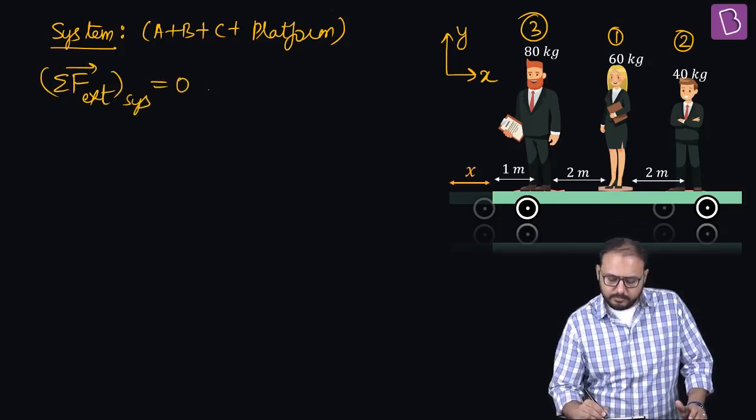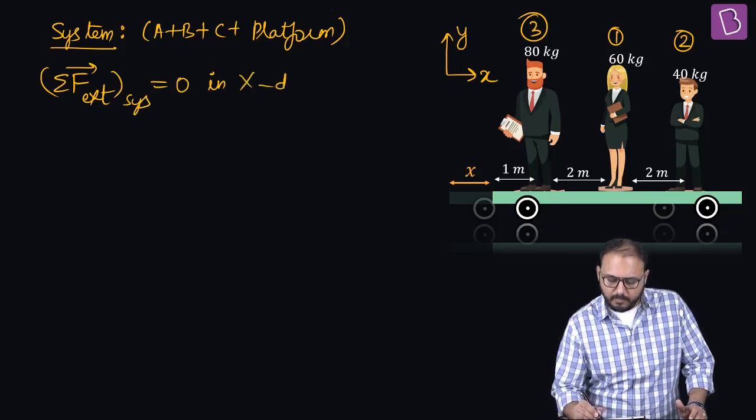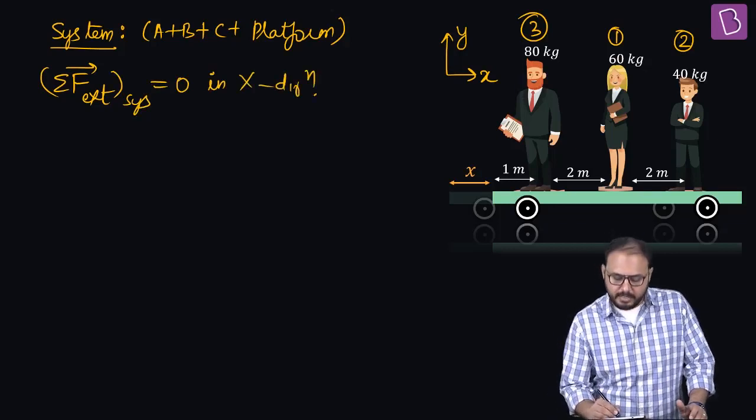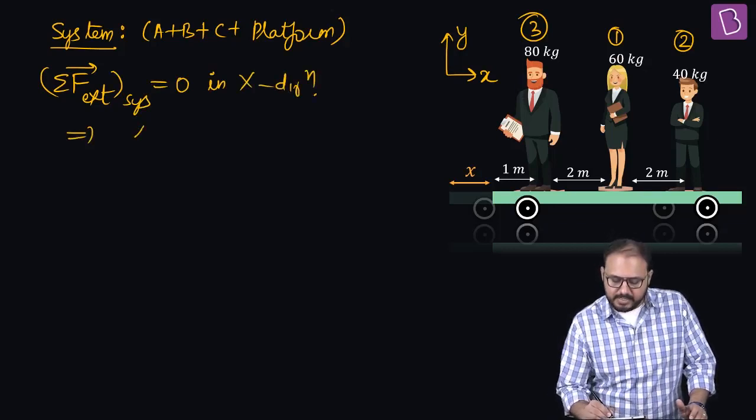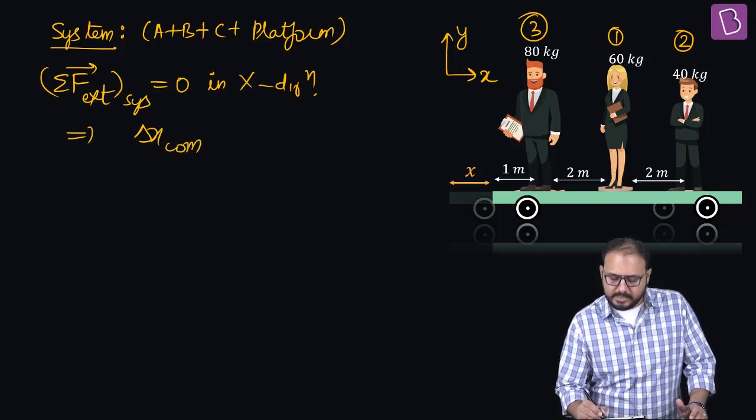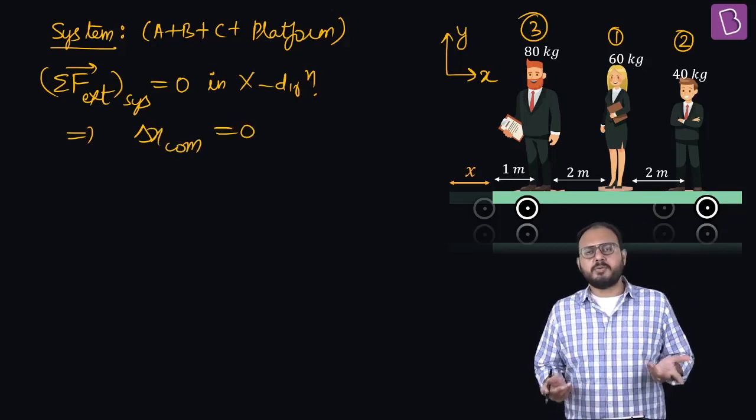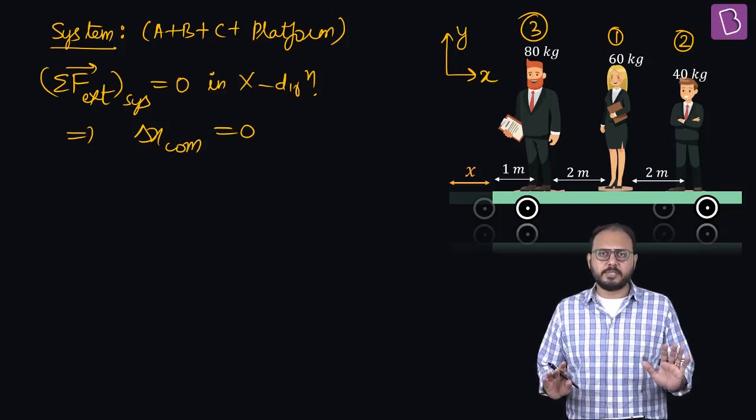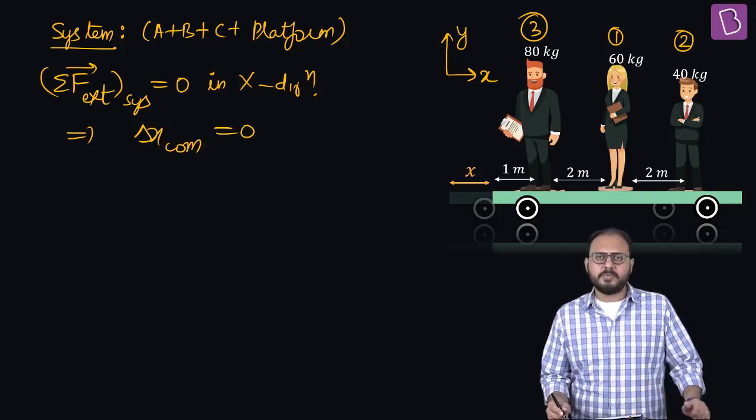In x direction, I am straight away saying delta x com equal to zero. Initially it was at rest, finally it will be at rest. Shall we start?